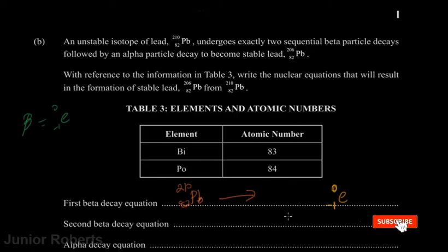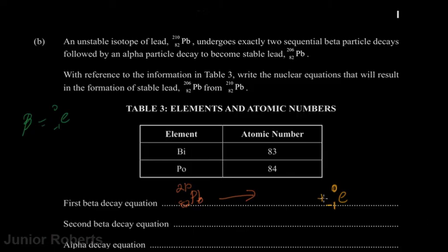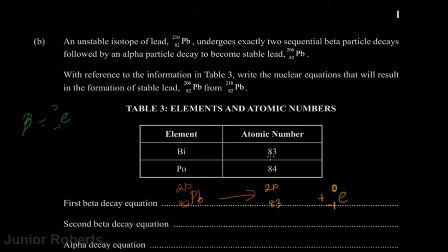In the beta decay equation, lead-210 (atomic number 82, mass number 210) emits an electron with mass number 0 and atomic number −1. To conserve atomic number: 82 − (−1) = 83. The mass number remains unchanged at 210. Looking at our table, the element with atomic number 83 is bismuth. So the first beta decay produces bismuth-210.